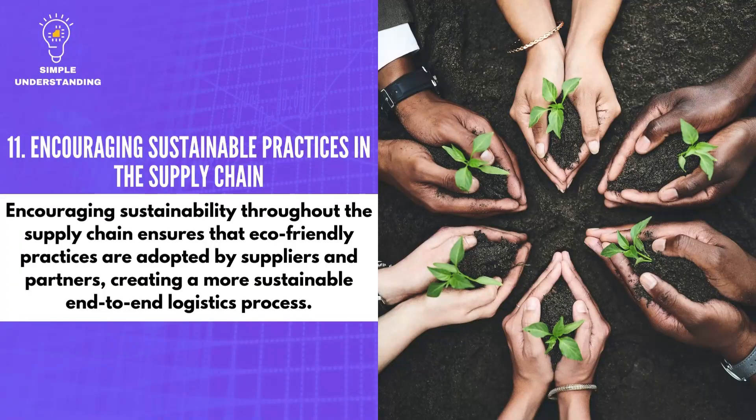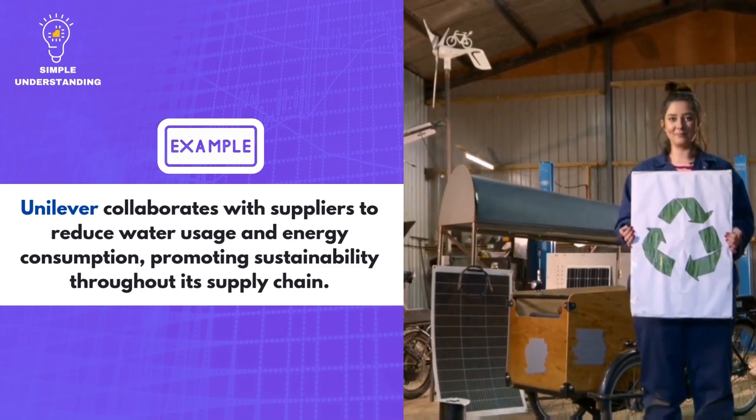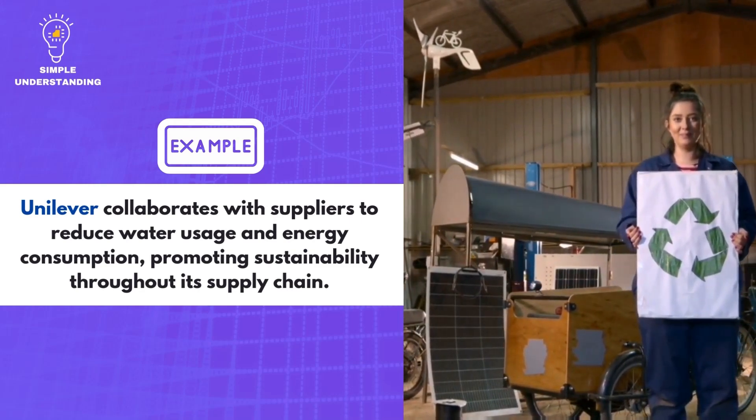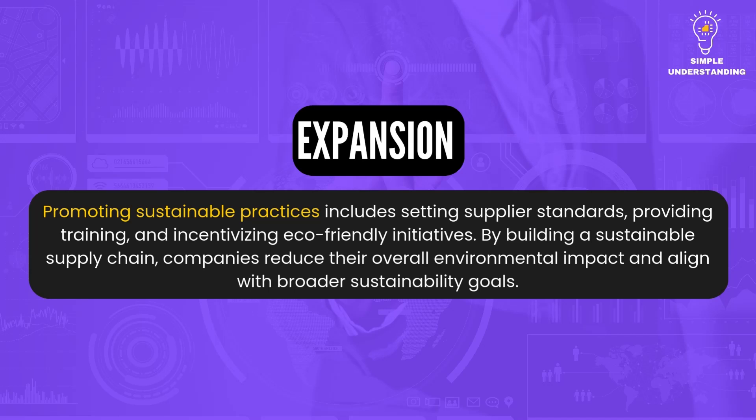11. Encouraging Sustainable Practices in the Supply Chain. Encouraging sustainability throughout the supply chain ensures that eco-friendly practices are adopted by suppliers and partners, creating a more sustainable end-to-end logistics process. Unilever collaborates with suppliers to reduce water usage and energy consumption, promoting sustainability throughout its supply chain. Promoting sustainable practices includes setting supplier standards, providing training, and incentivizing eco-friendly initiatives, reducing overall environmental impact.